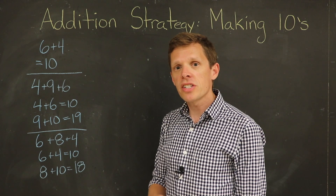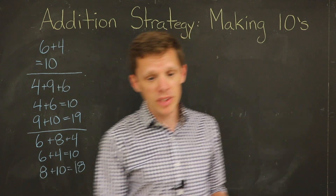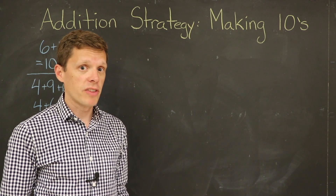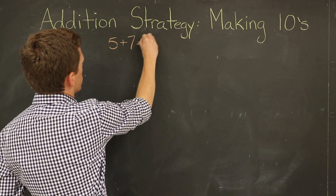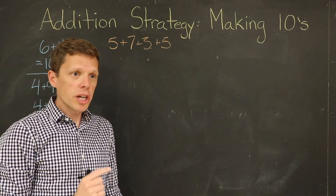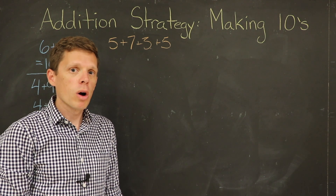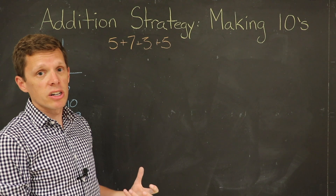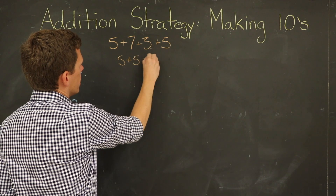Let's move on to another example. This time we're going to add four numbers together using the same principle of making tens: five plus seven plus three plus five. We're still thinking of the same strategy — look at those numbers and ask yourself what numbers can I add together to give me ten. What might jump out right away is the five and the five — two fives make ten, so let's start there: five plus five equals ten.